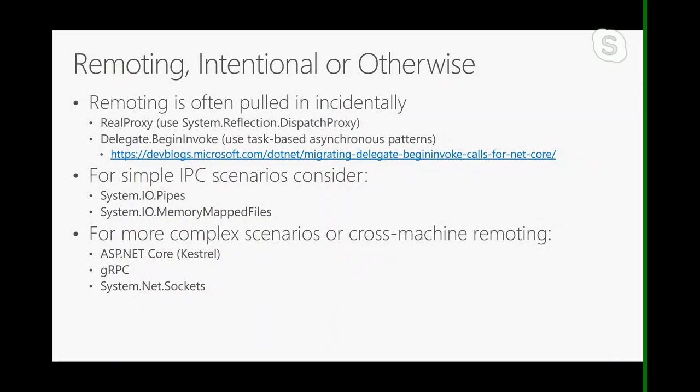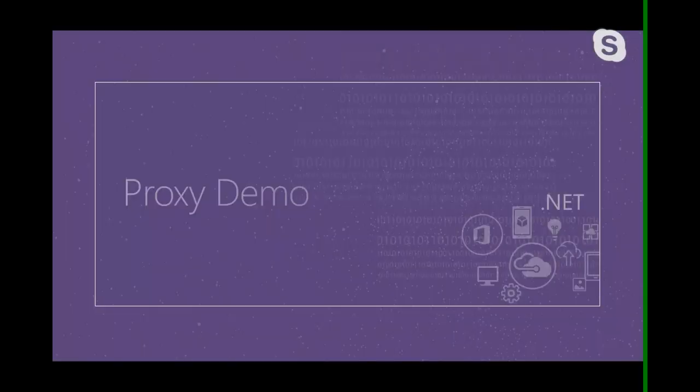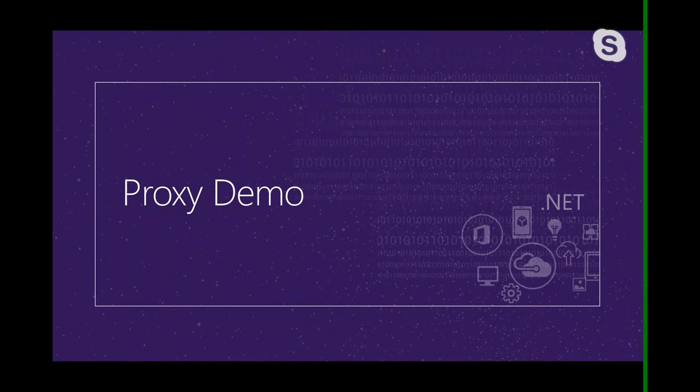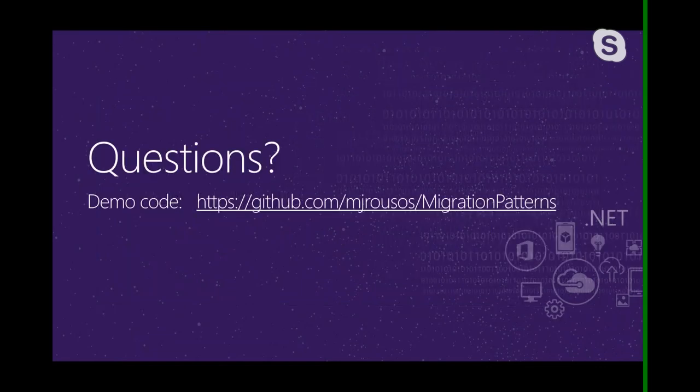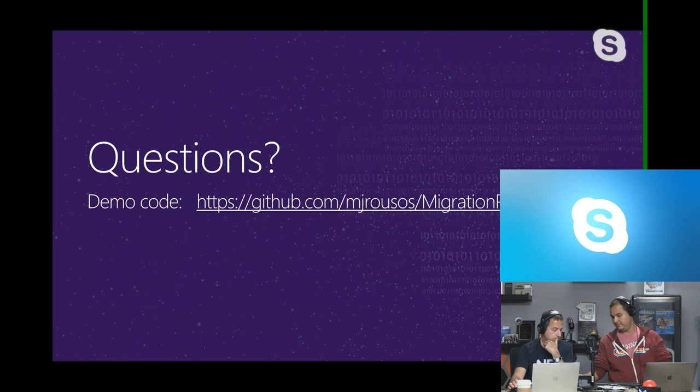Another place remoting comes up inadvertently is if you're using .BeginInvoke or .EndInvoke on a delegate — under the covers that asynchronous programming model uses remoting in its implementation, so you can't do that on .NET Core. Instead, you should use task-based asynchronous patterns: use Task.Run and things like that. I've got a blog post on this one if you want more details, and I'm working on a blog post on proxies. If you're actually doing remoting, you've got APIs for simple inter-process communication and for more complex cross-machine remoting scenarios — again, gRPC and ASP.NET Core are the recommended alternatives. Here's the link out to GitHub where you can get the demo code I was showing you.